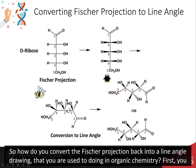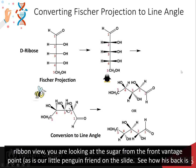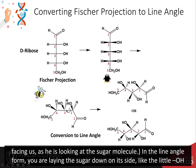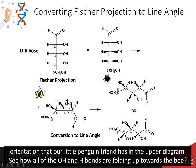So how do you convert the Fischer projection back into a line angle drawing? First, you need to think about the perspective that you are looking at the sugar functional groups. In the Fischer projection and the subsequent 3D ribbon view, you are looking at the sugar from the front vantage point, as our little penguin friend shown on the slide. See how his back is facing us and he is looking at the sugar molecule. In the line angle form, you are laying the sugar down on its side, like the little OH legs are sticking up into the air.